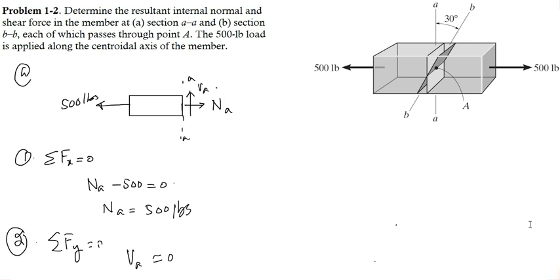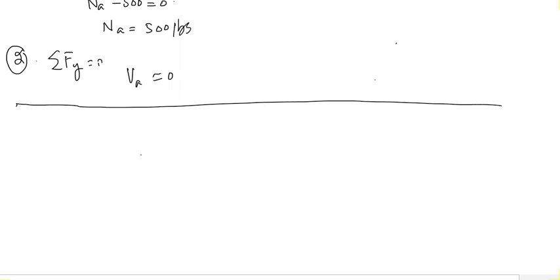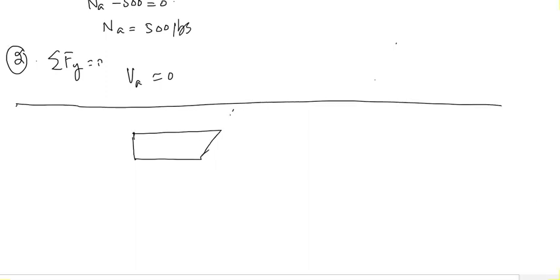Now let's move on to the second part of the problem, in which we have to determine the normal and shear force at section BB, which is at an angle of 30 degrees with section AA. We draw the free body diagram of the left portion of the member after cutting through section BB. This is section BB, which is at 30 degrees with section AA — section AA was exactly vertical.